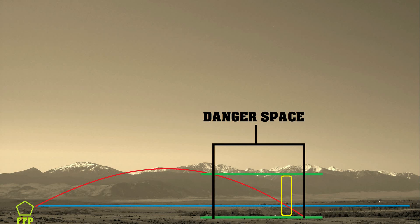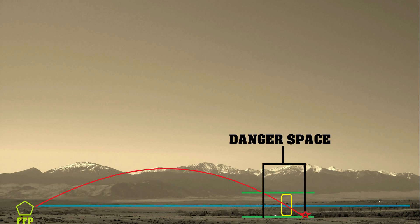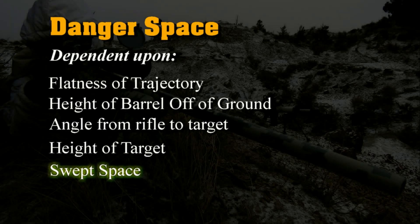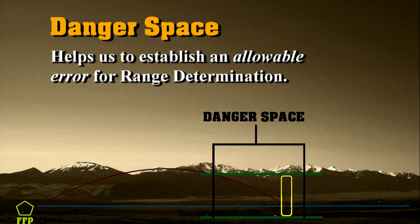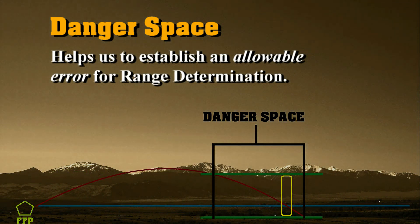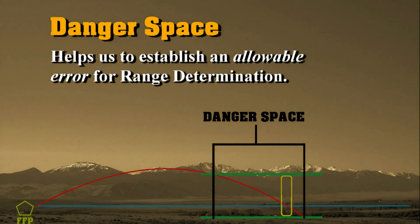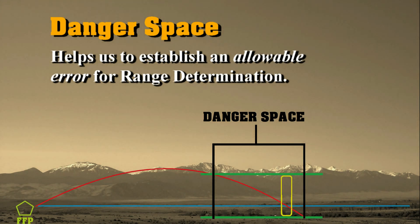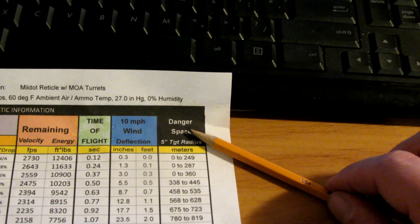Compare that to shooting at a deer with maybe a 12- to 18-inch lethal bracket in the chest area — you'll have less danger space there. It's also going to depend on the slope of the ground the target is standing on, which relates more to a different term called swept space. Danger space helps us determine how close we need to be with a range determination, and this is very relevant when you're doing your range card — when you establish an FFP and the spotter fills out a range card, you need to know how precisely you must range the target to hit it.